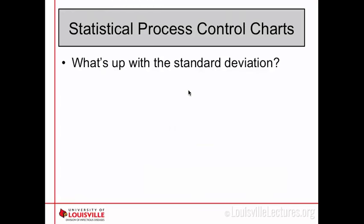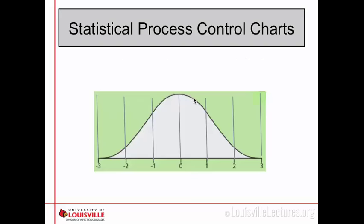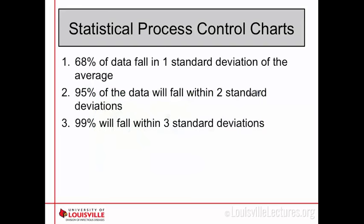All data have a distribution, and that distribution is split up into standard deviations, which tell you how far you are from the center. If you think of a histogram or probability density curve, the mean is at the top — your measure of central tendency — with one, two, and three standard deviations on either side. 68% of your data is going to fall within one standard deviation — about two-thirds of your data.